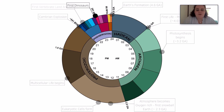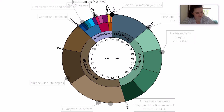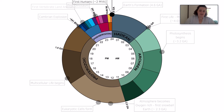From 10:40 to 11:40, dinosaurs rule the Earth. Then two minutes to midnight, our evolutionary history begins with hominids branching off from the apes. And modern humans — aka us — arrive just as the clock strikes midnight.